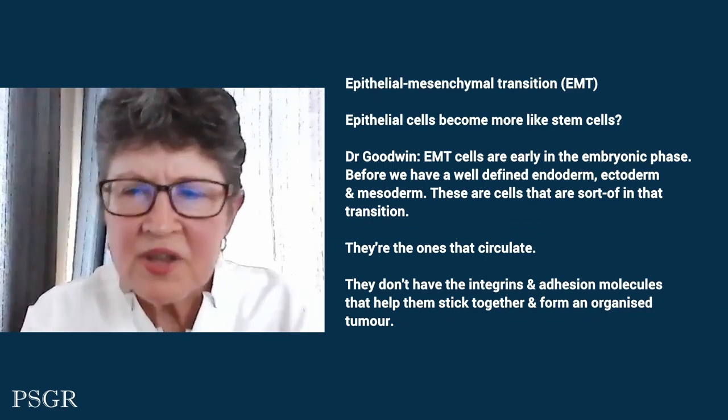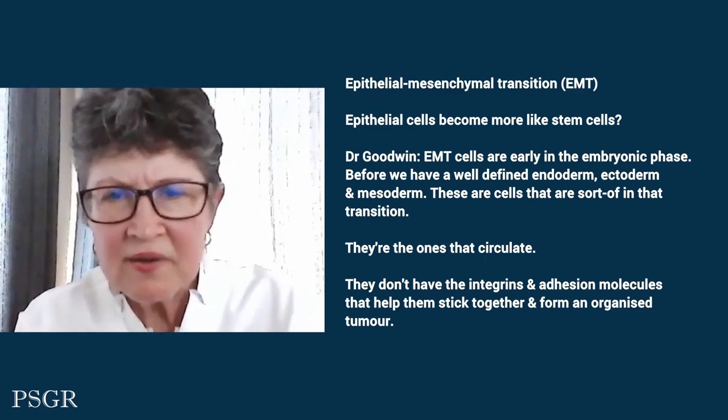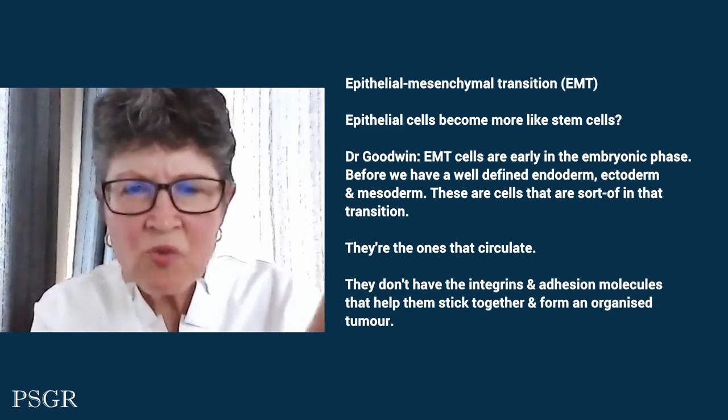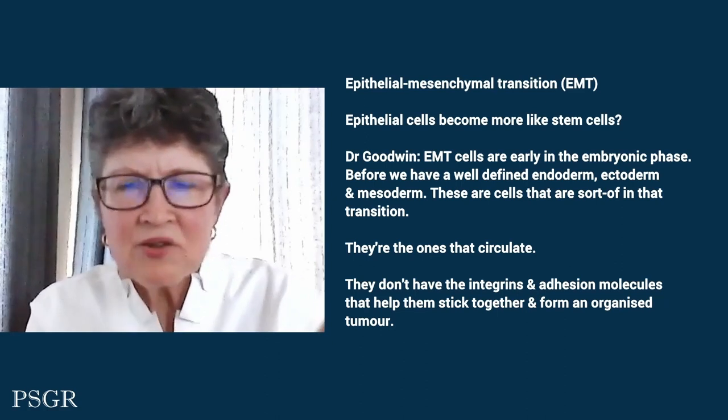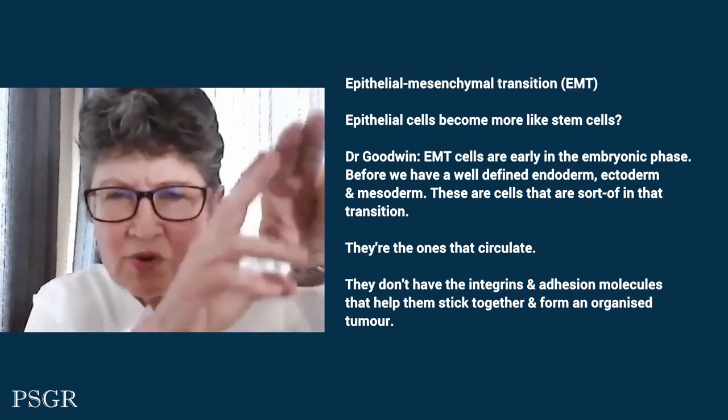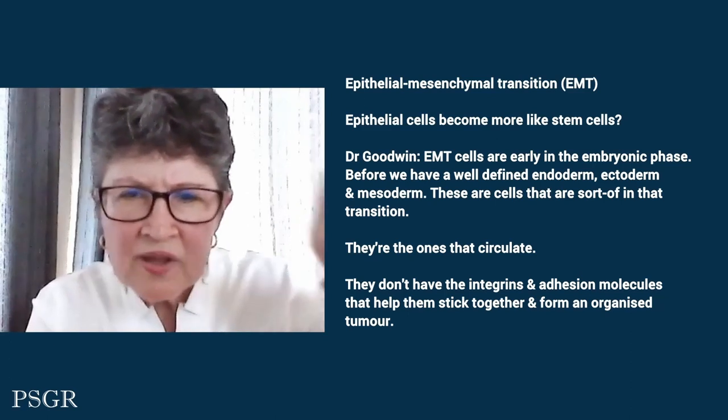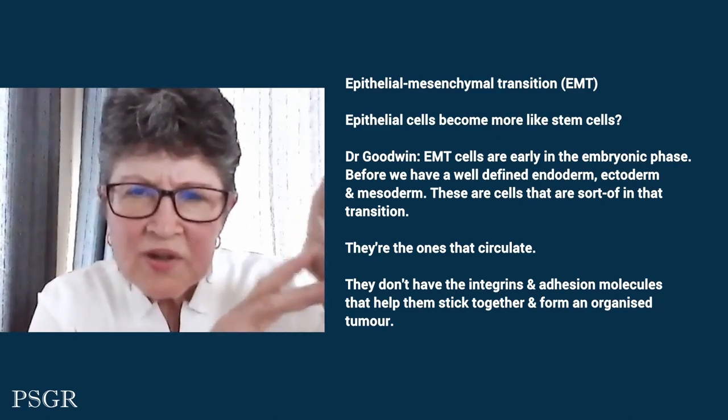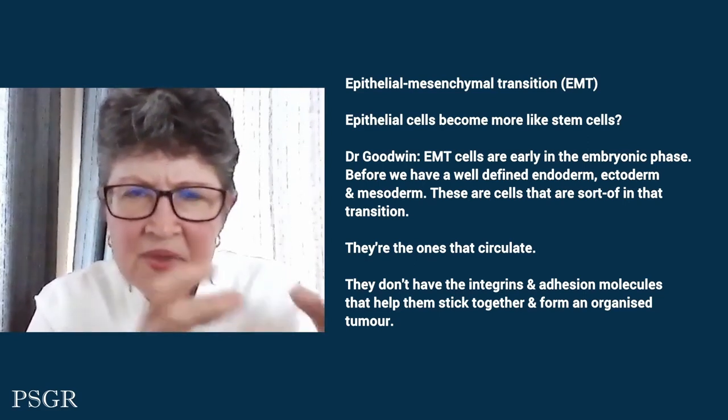The EMT — epithelial-mesenchymal transition — is when epithelial cells start moving around. EMT cells are cells that are early in the embryonic phase, before we have a well-defined endoderm, ectoderm, and mesoderm. They relate to a degree of stemness; they are early embryonic cells that circulate and they don't have the integrins and adhesion molecules that help them stick together and form an organized tumor.